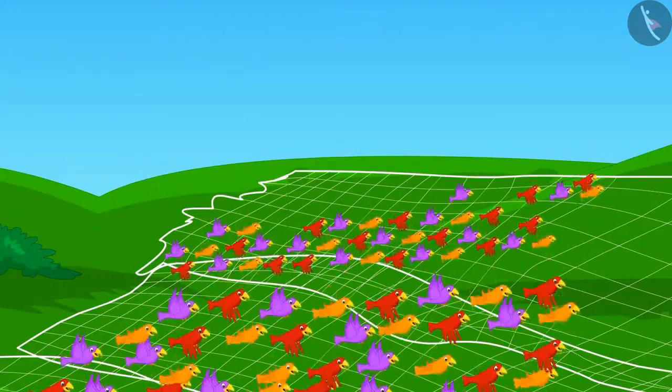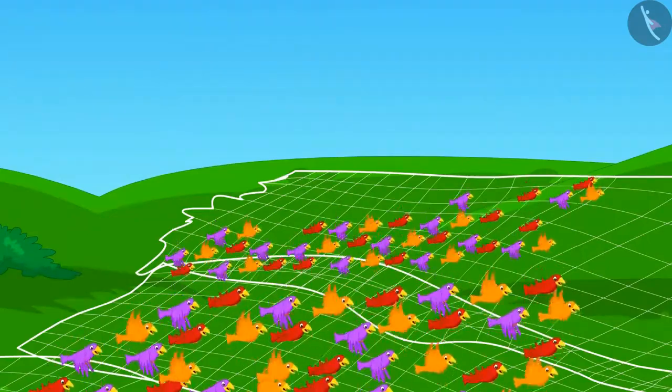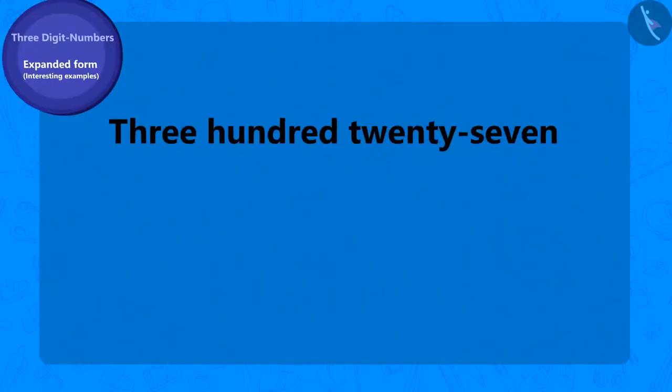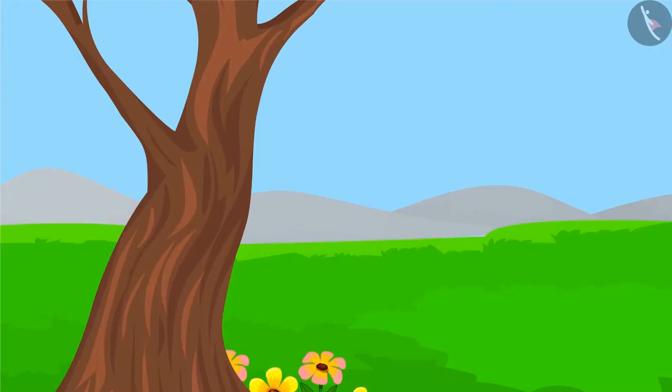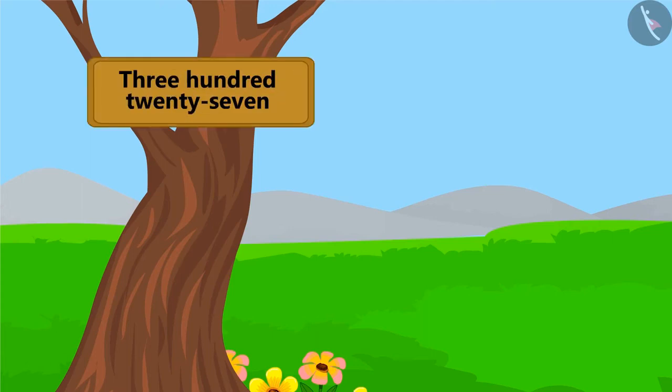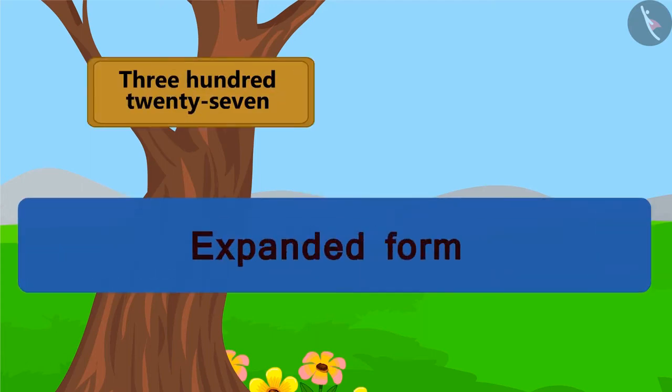Some of the birds thought that they will fly away taking the net with them. At first, 327 birds tried to fly away with the net. Let's see how we can write this number name in its expanded form.